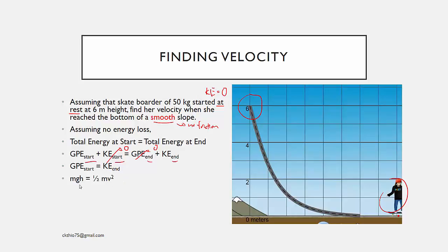Substituting in the formulas, we have mgh = ½mv². Since m appears on both sides, we can cancel it, leaving gh = ½v². Substituting in the values and taking the square root of 120, we get 11 meters per second. So that is the solution.